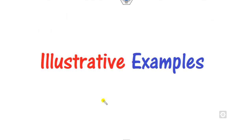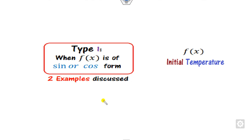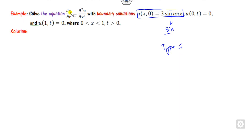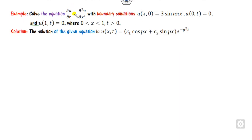We will now discuss the seven illustrative examples. The first case is when the initial temperature is in the form of sine and cosine. Given an initial condition in sine form, this is Type 1, which is very simple. Since this is the heat equation, we start from the valid solution and first substitute the boundary conditions.